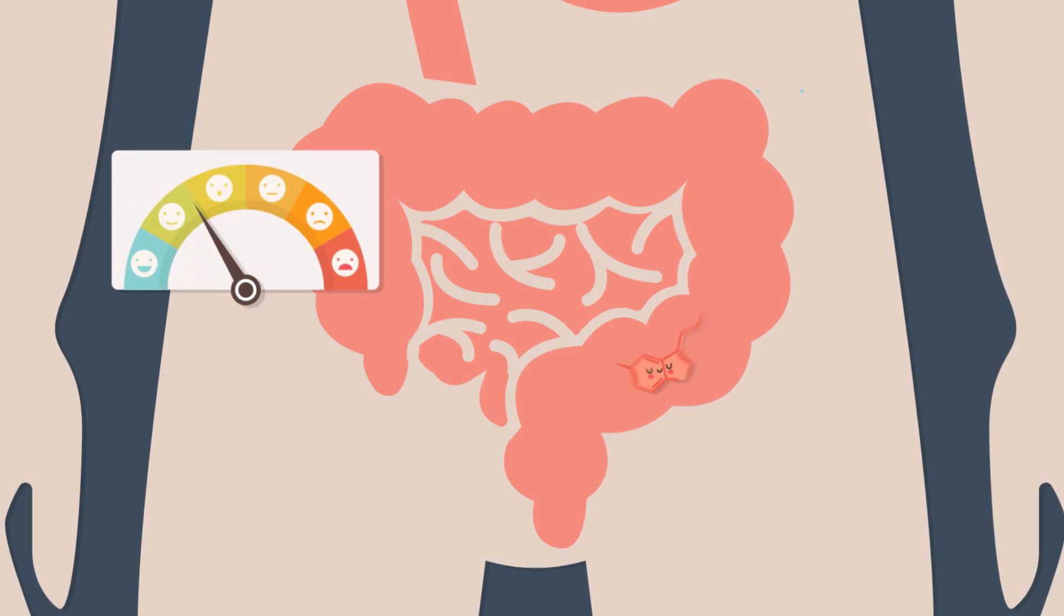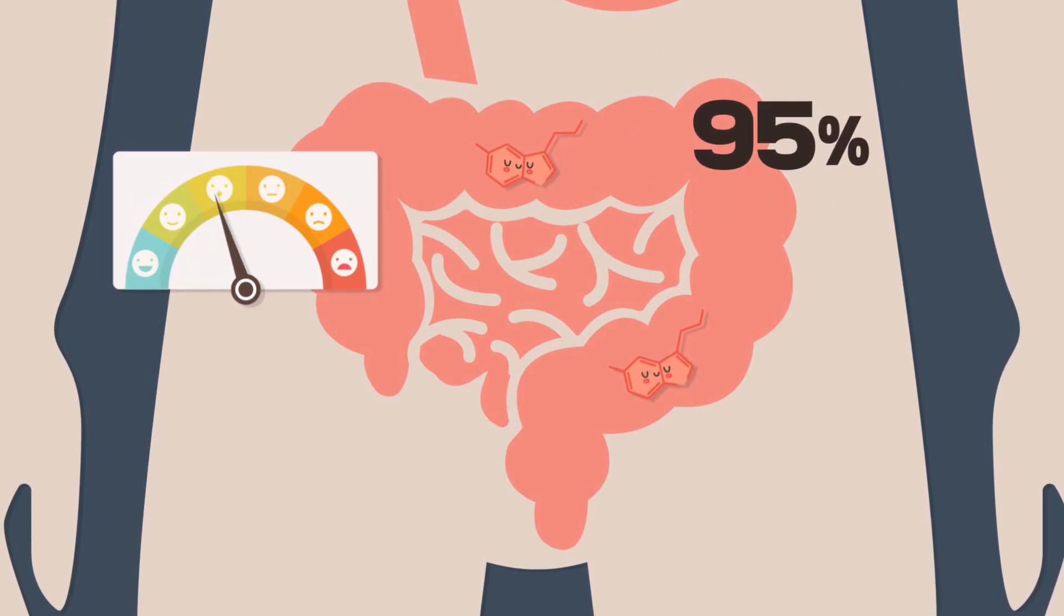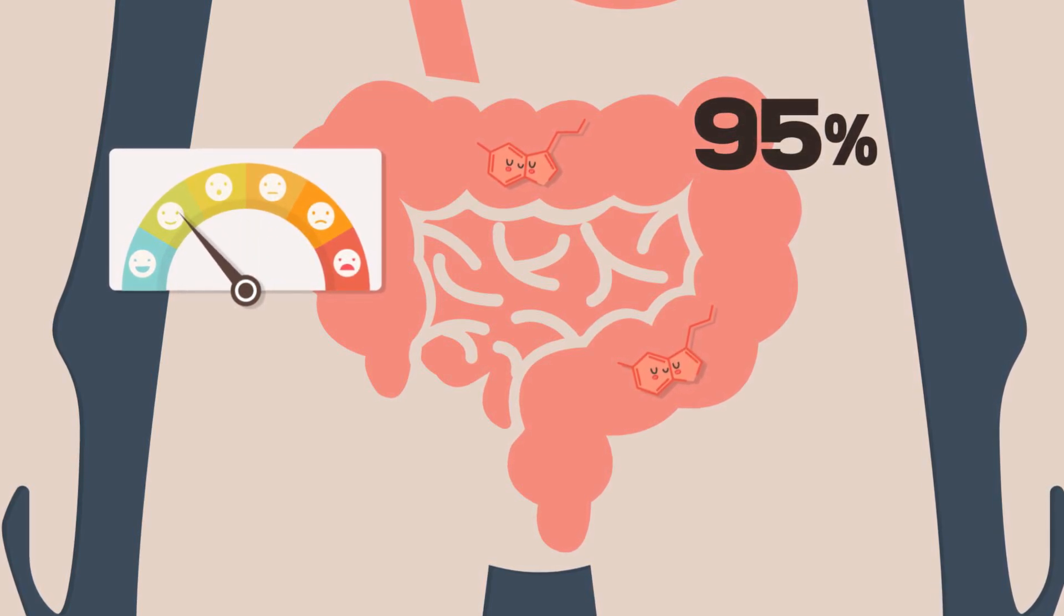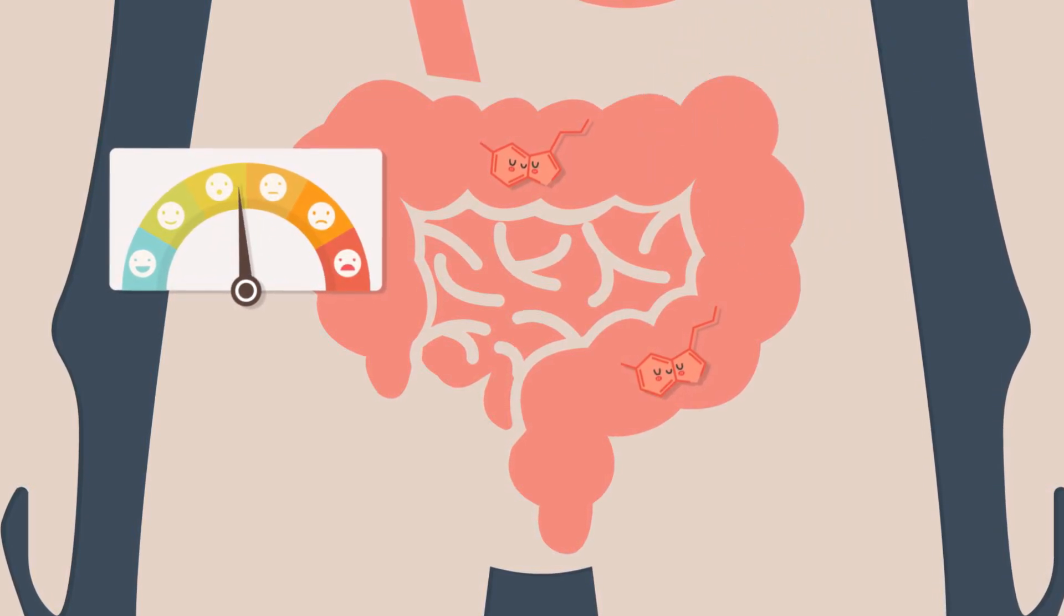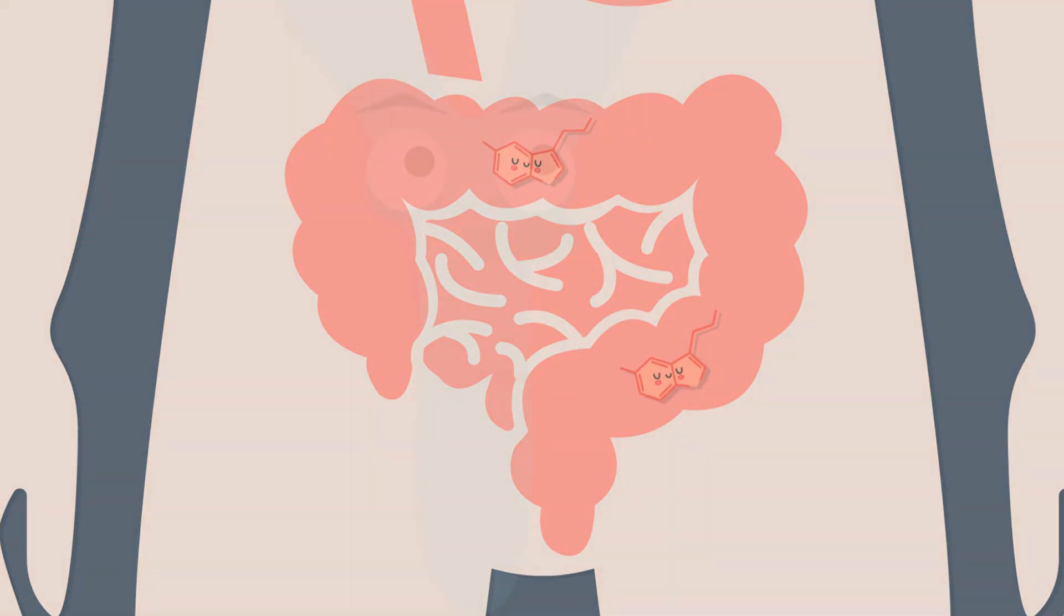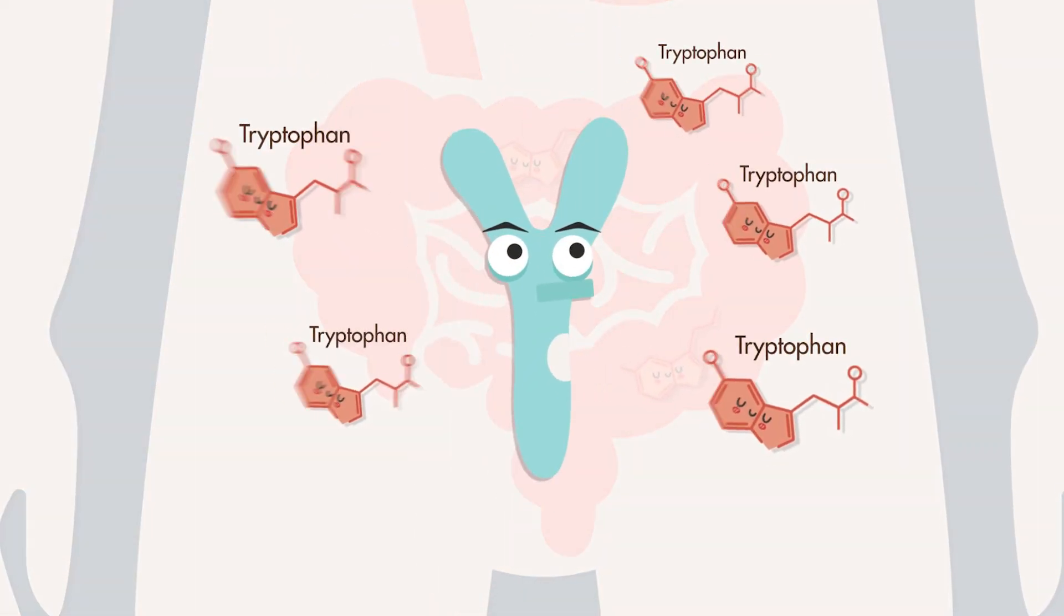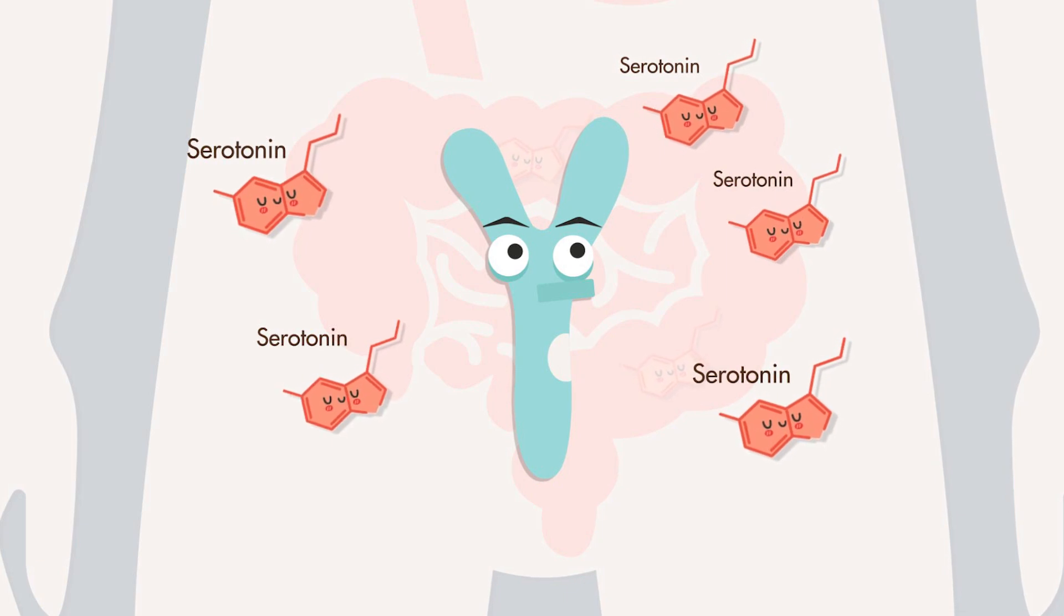In particular, 95% of serotonin, a neurotransmitter involved in emotion and sleep control, is made in the intestines. And, HMO promotes the production of tryptophan, which is a precursor of serotonin.